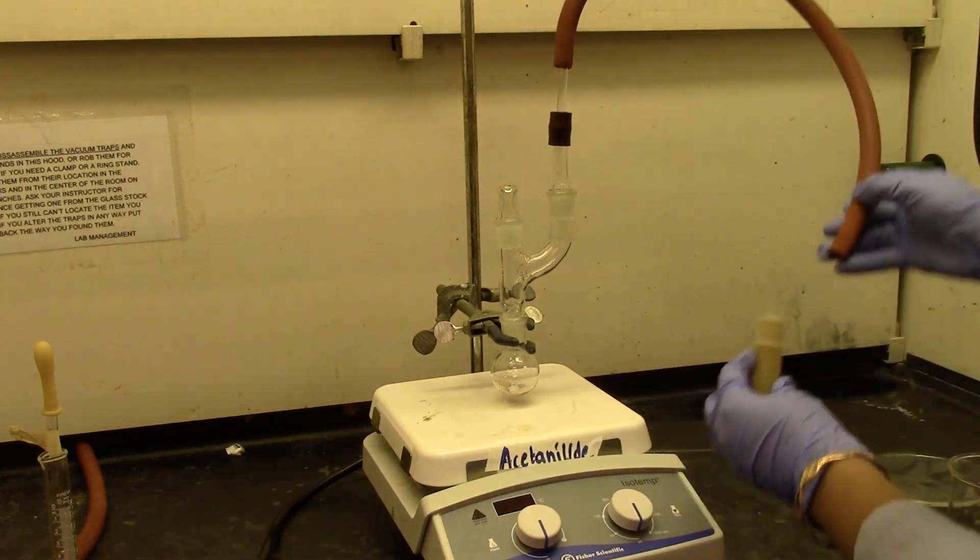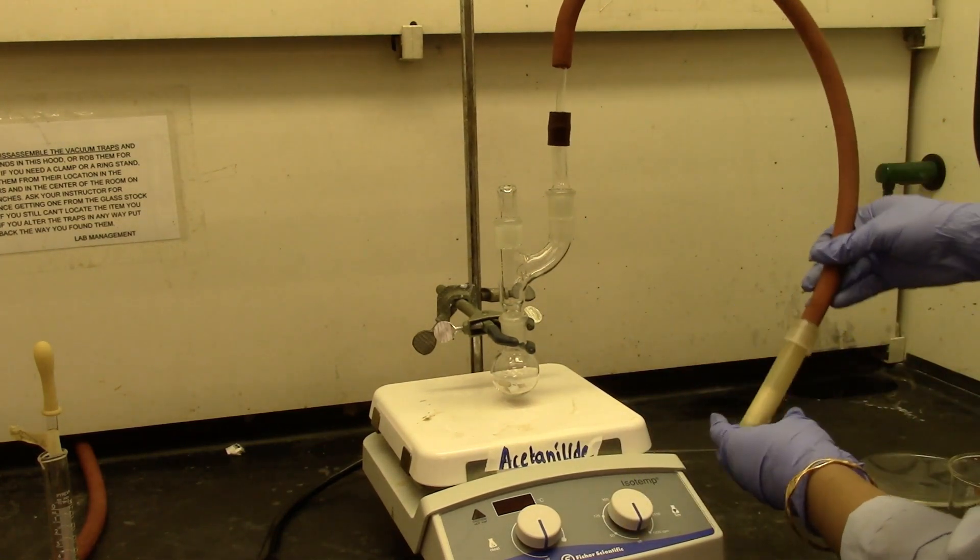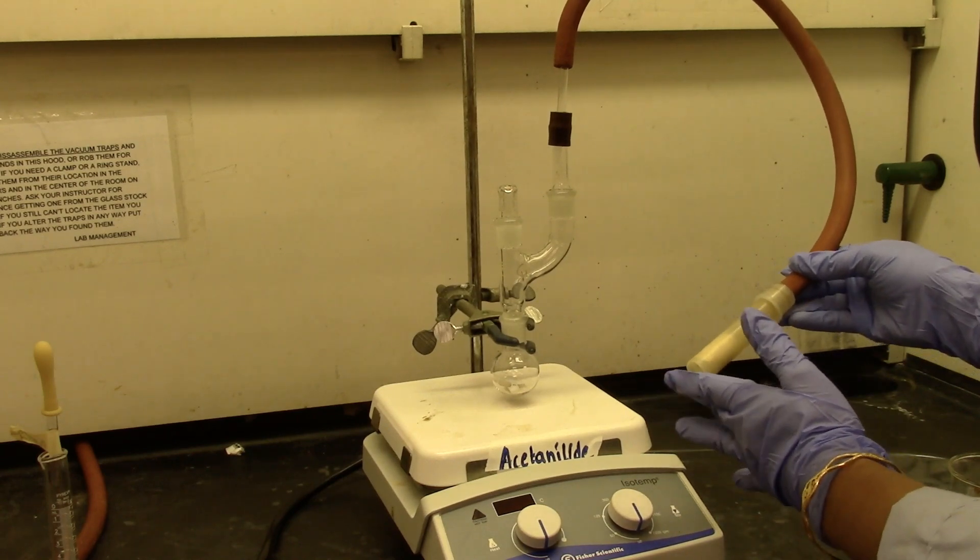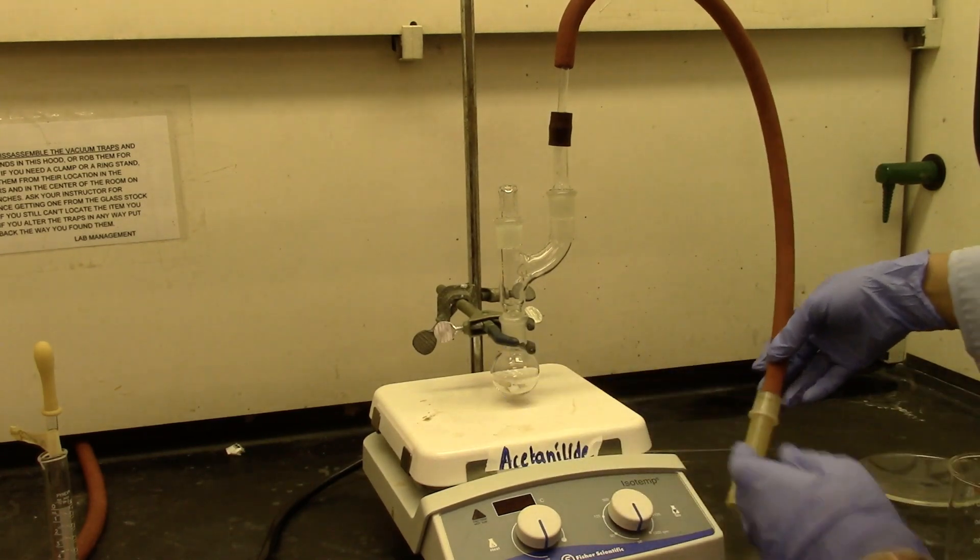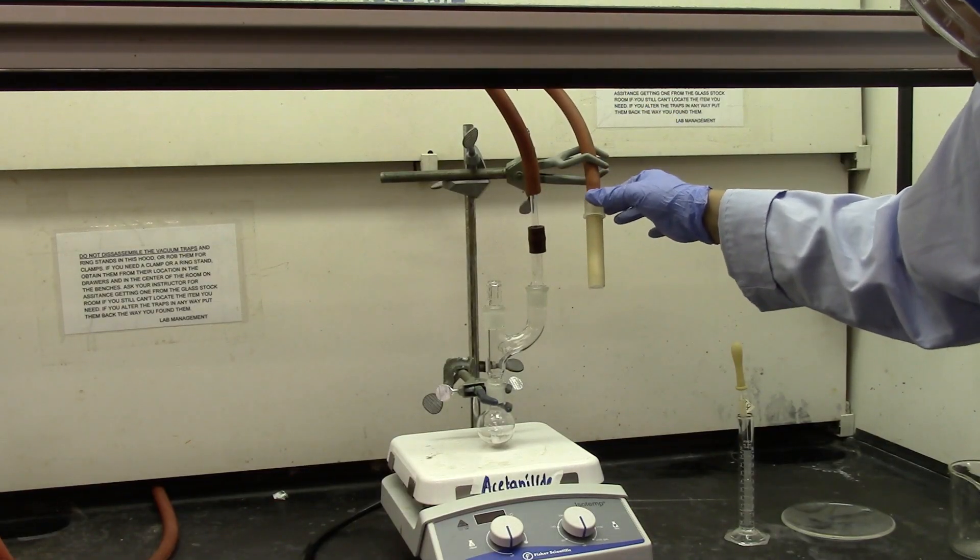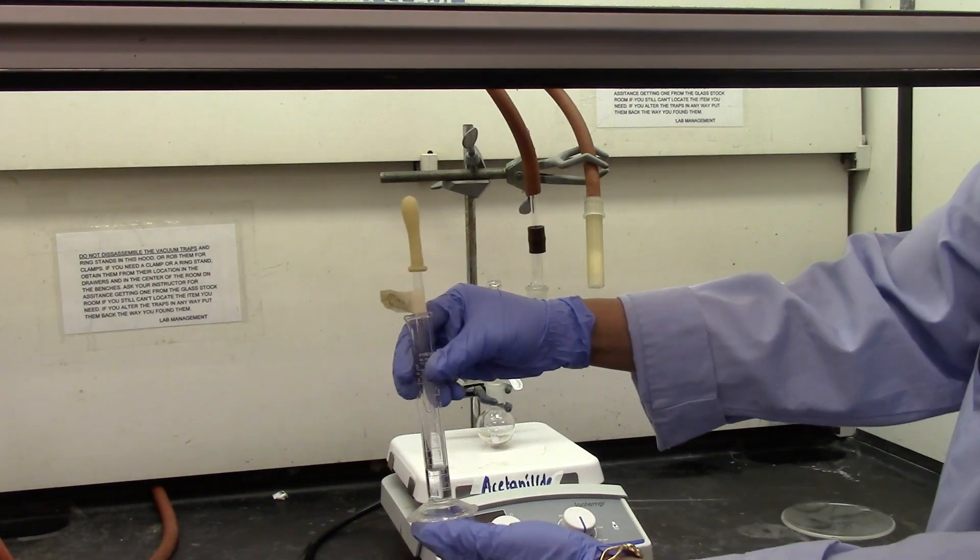And this goes in the drying tube. I'm going to attach it with the tubing right here. This is going to catch any bromine vapors that might be escaping from the solution.